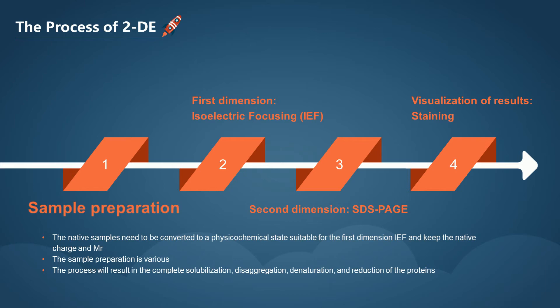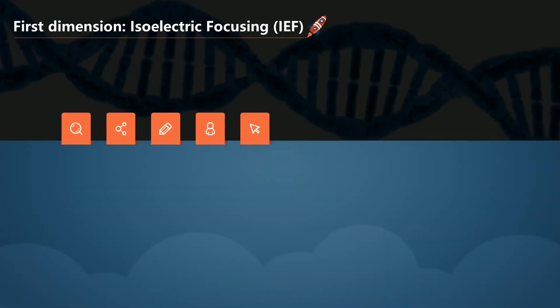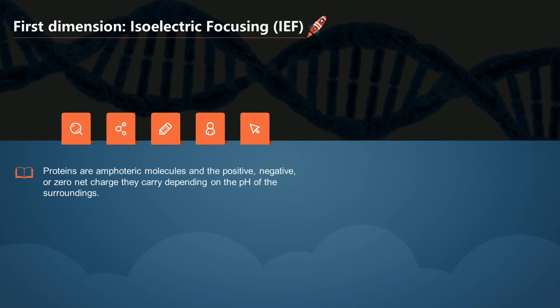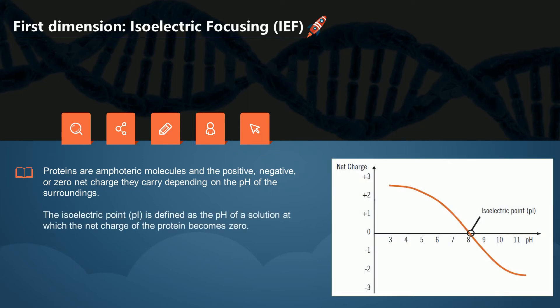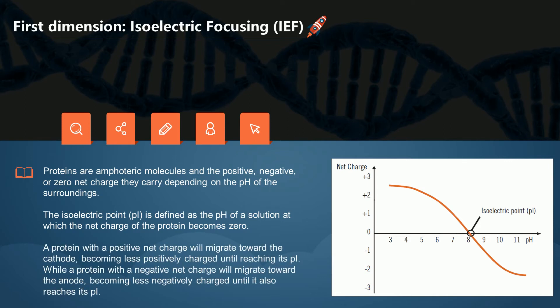As we mentioned above, the first dimension separates proteins depending on isoelectric points. Proteins are amphoteric molecules, and the positive, negative, or zero net charge they carry depends on the pH of the surroundings. The isoelectric point is defined as the pH of a solution at which the net charge of the protein becomes zero. A protein with a positive net charge will migrate toward the cathode, becoming less positively charged until reaching its isoelectric point. While a protein with a negative net charge will migrate toward the anode, becoming less negatively charged until it also reaches its isoelectric point.